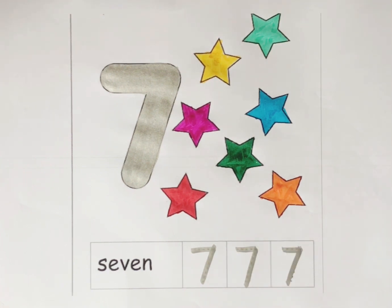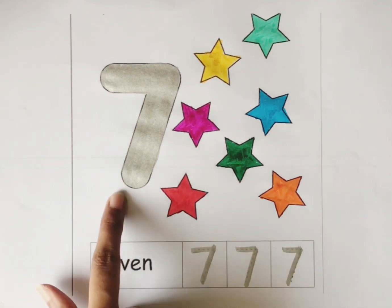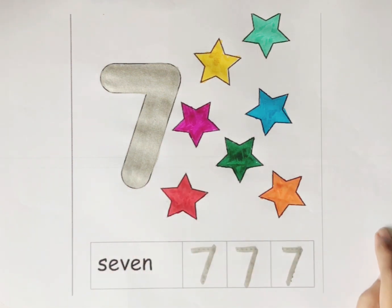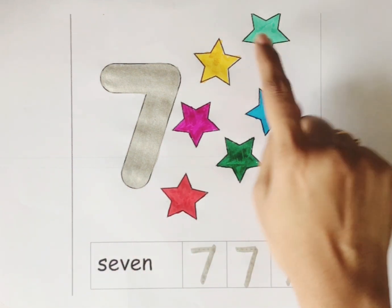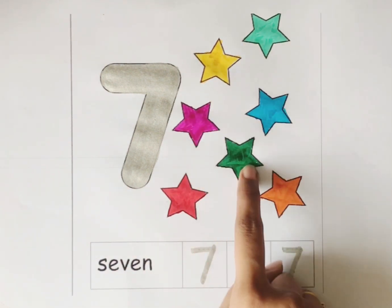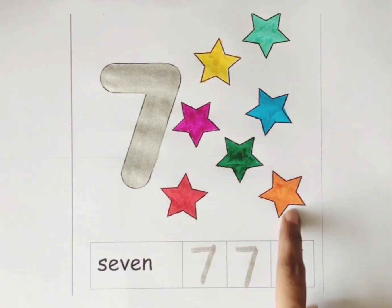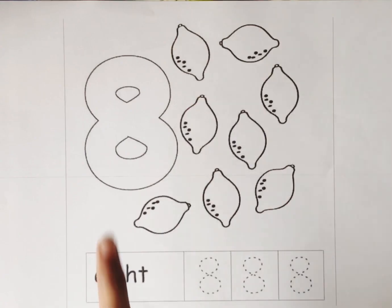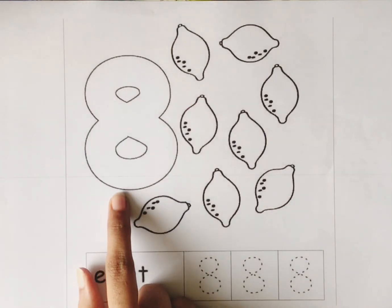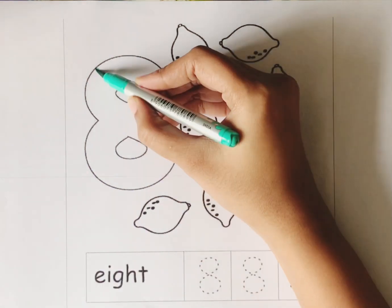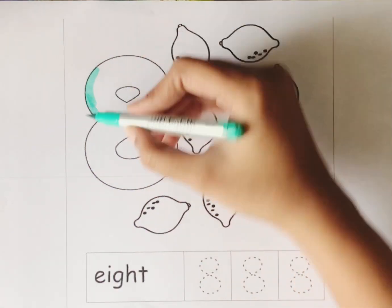7. Number 7. Let's count the stars: 1, 2, 3, 4, 5, 6, and 7. Total we have 7 stars.